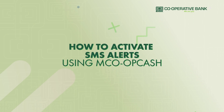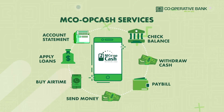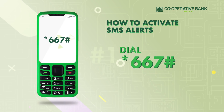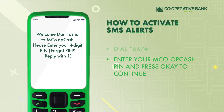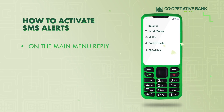How to activate SMS alerts using M-Corp Cash. With Cooperative Bank M-Corp Cash, you have a few simple steps to access a variety of banking, money transfer and payment services. To activate SMS alerts using M-Corp Cash, simply dial star 667 hash, enter your M-Corp Cash PIN and press OK to continue.